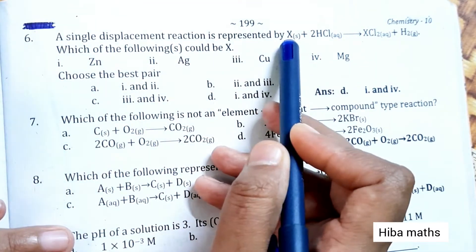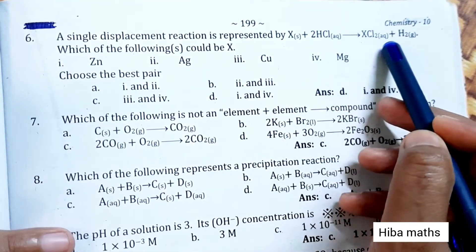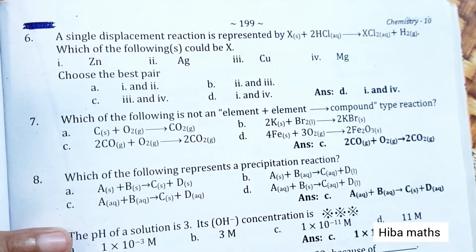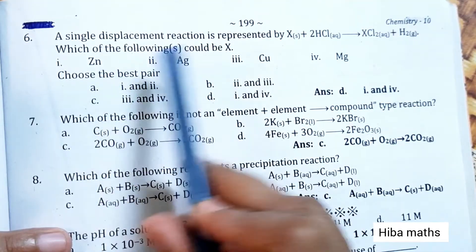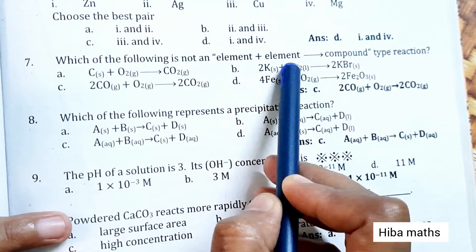Which of the following could be X? Choose the best pair. The answer is option D: first and fourth. Which of the following is not an element plus compound type reaction?